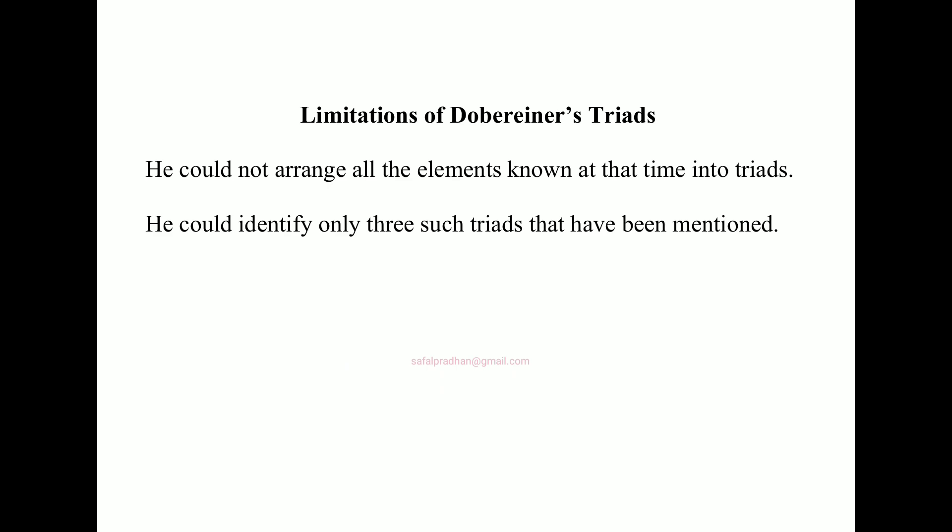But there were limitations — meaning defects or problems — with Dobereiner's classification. He could not arrange all elements; at the time around 40–50 elements had been discovered, but he could only identify three triads. He was the first to make a start, which is good, but he could not arrange more elements. We will talk about what other scientists did to classify elements in the next video.